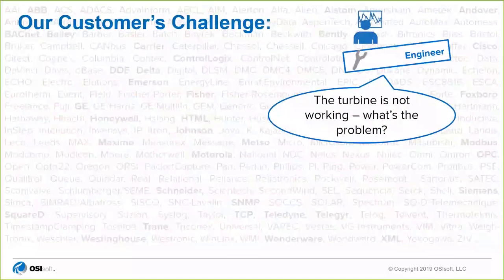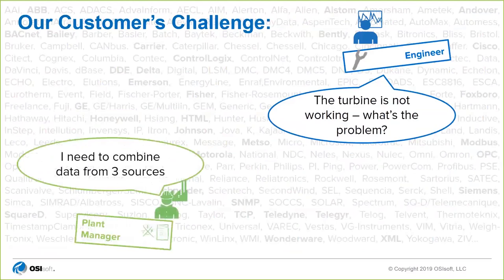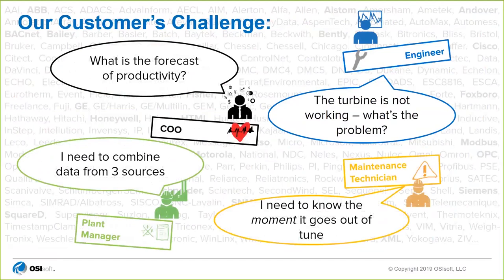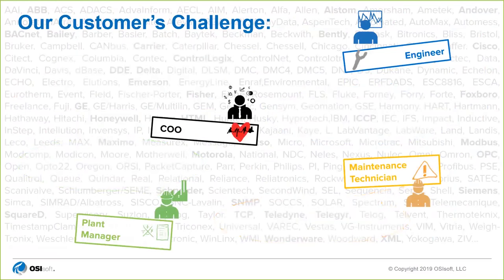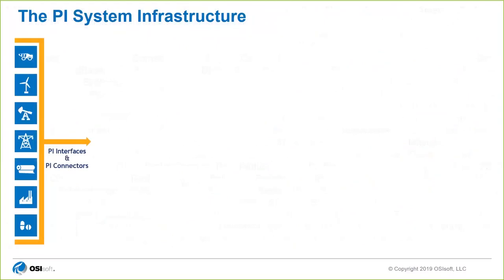Generally, when we have customers — whether small or large — an engineer at that company might be working with a turbine and want to analyze problems. A plant manager would oversee multiple processes and need data from all of them. A maintenance technician needs real-time data to make sure everything is running, and if not, send a team to fix it. At the executive level, management wants to know productivity forecasts and a high-level overview of how the business is performing.